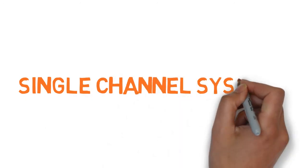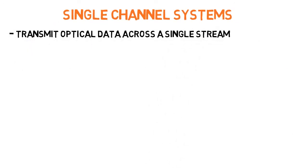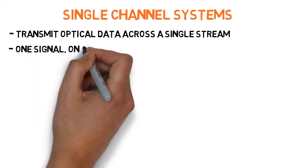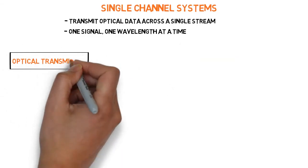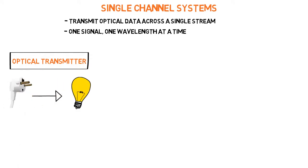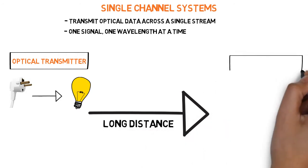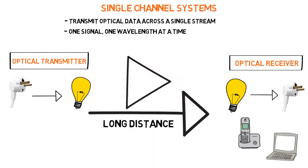Single-channel systems transmit optical data over a single stream — that is, one signal over one wavelength at a time. First, an optical transmitter transforms an electrical signal into an optical one and sends it along the optical path. An optical receiver on the other end takes the signal and transforms it back into an electrical one. It is imperative that the signal be boosted along the way, or else it would not be able to travel such long distances.